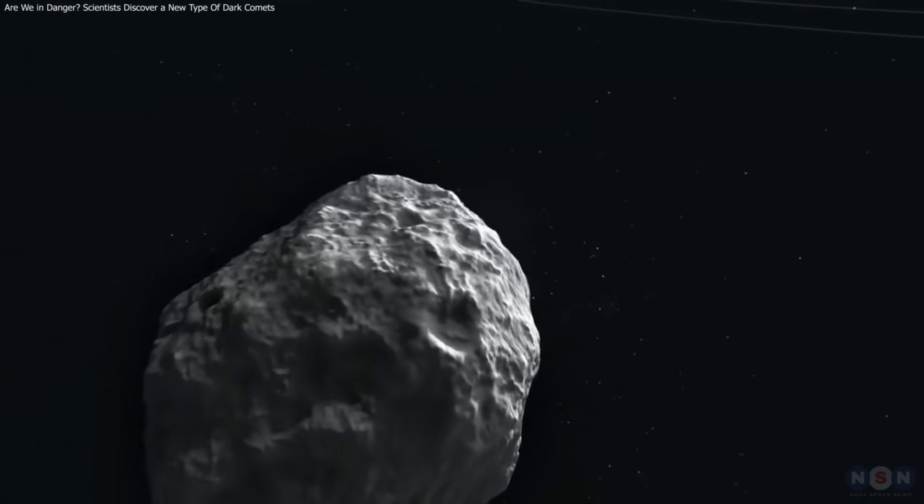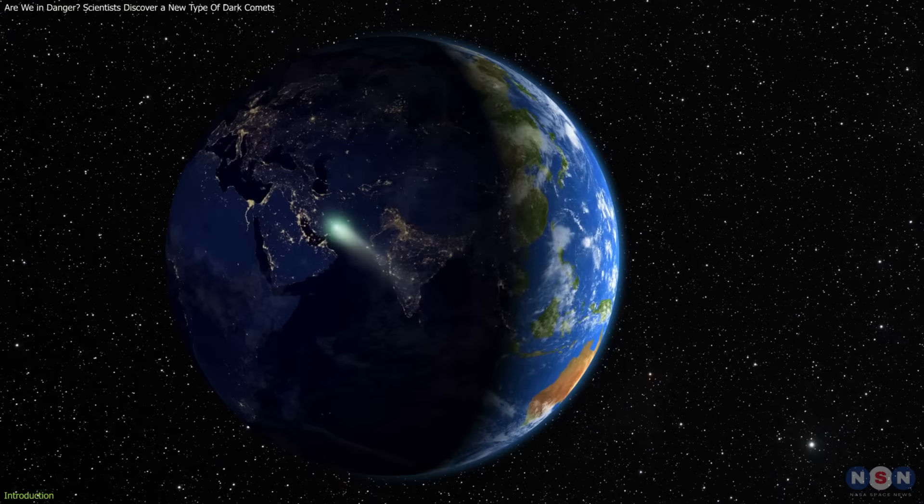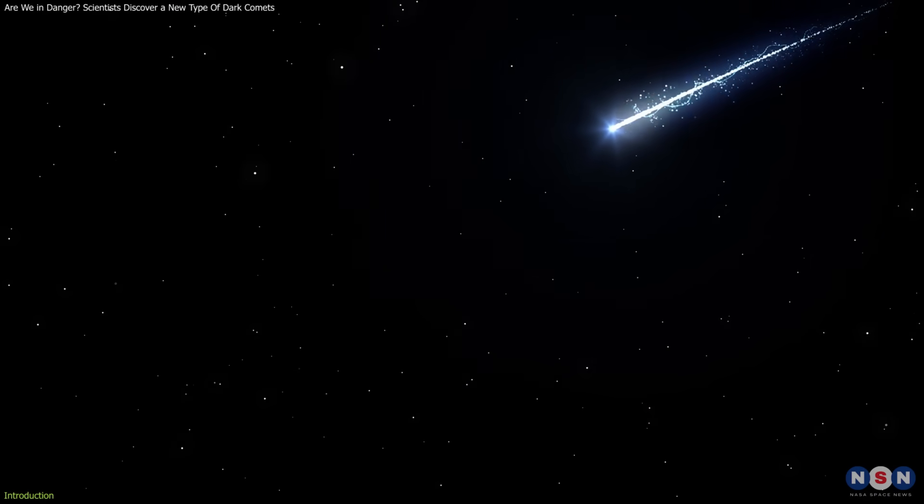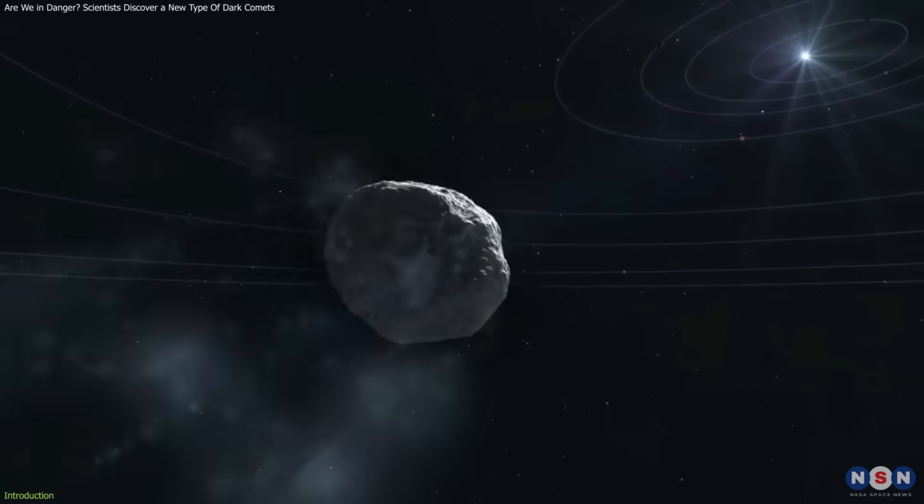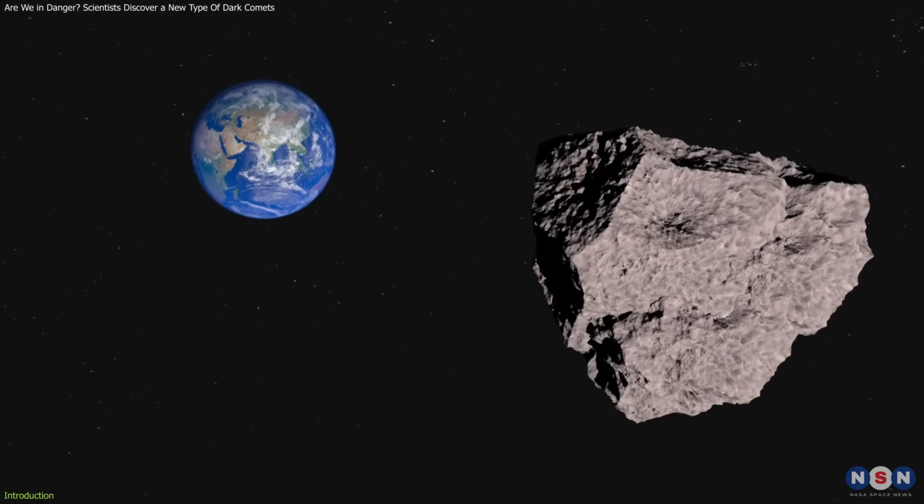Dark comets are mysterious space objects that look like asteroids but act like comets, challenging what we know about the solar system. Unlike the bright-tailed comets we see in textbooks, these objects don't have visible tails or outgassing, but their movements suggest something unusual is happening.